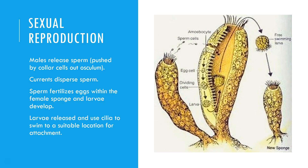Sexual reproduction is what we are most familiar with. The male sponges release sperm which is pushed out of the osculum by the collar cells. The currents are what the sponges rely on to take that sperm away into hopefully a female sponge.